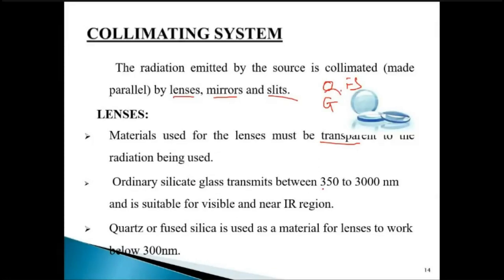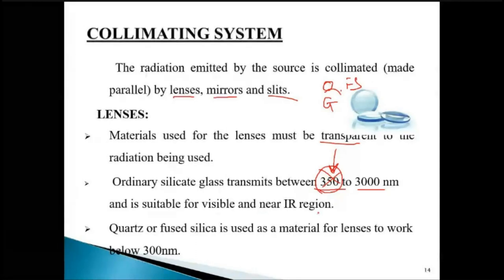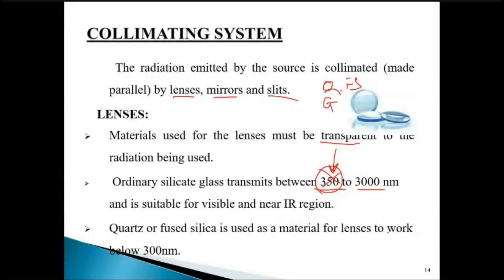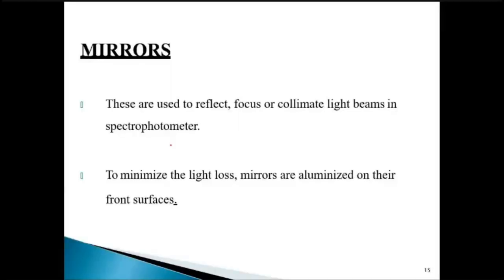Ordinary silicate glass transmits between 350 to 3000 nanometers. Below this range, a significant part of the UV region will be blocked. Therefore, ordinary glass is used only for the visible and near-IR region, not for the UV region. Fused silica is used as the material for lenses to work below 300 nanometers.